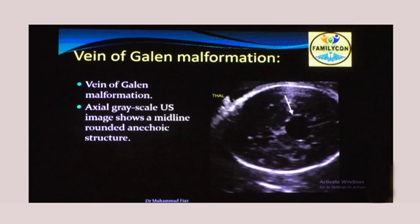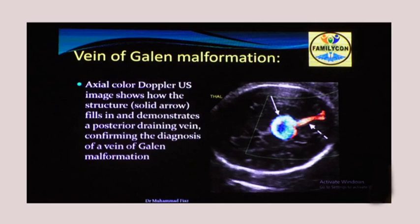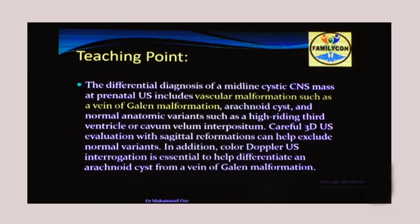Regarding vascular anomalies, vein of Galen malformation is one of the most common. The image shows a rounded cystic area in the midline, but on Doppler it is a large vascular structure — a typical case of vein of Galen malformation. The differential diagnosis of a midline cystic CNS mass at prenatal ultrasound includes vein of Galen malformation, arachnoid cyst, and some normal variants. Doppler makes it very easy to differentiate vein of Galen malformation from an arachnoid cyst.